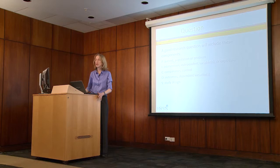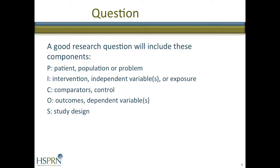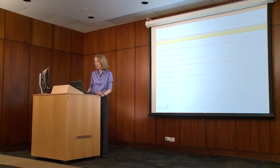A good research question needs to be well formulated, focused, and relevant. The components of the research question are captured in the acronym PICOS. The P stands for patient, population, or problem. I stands for the intervention being evaluated. C stands for the comparators, or the control to which the intervention is being compared. O is the outcome, and S is the study design. For example, some systematic reviews may focus on a specific study design, such as only randomized control trials or only cohort studies.